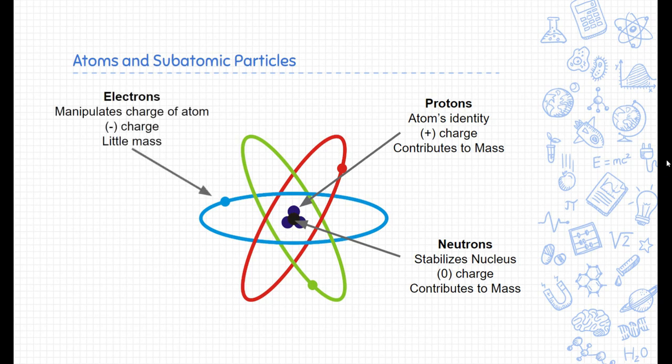Outside of the nucleus are these electrons, part of the electron cloud. Electrons manipulate the charge of an atom. They're negatively charged but they counteract the protons positively. Electrons have very little mass, therefore we don't really even count them as part of the overall mass of an atom.